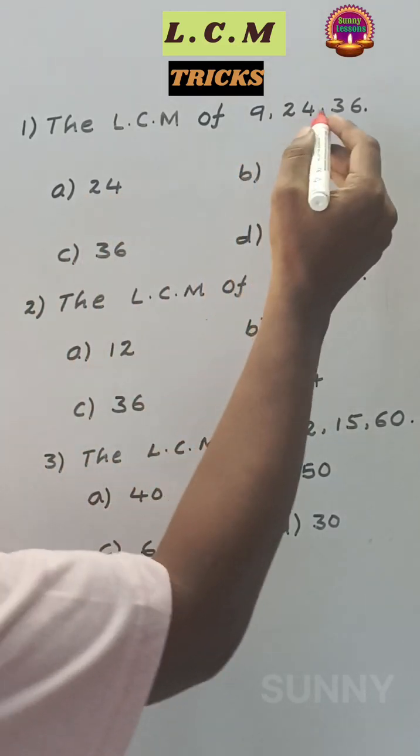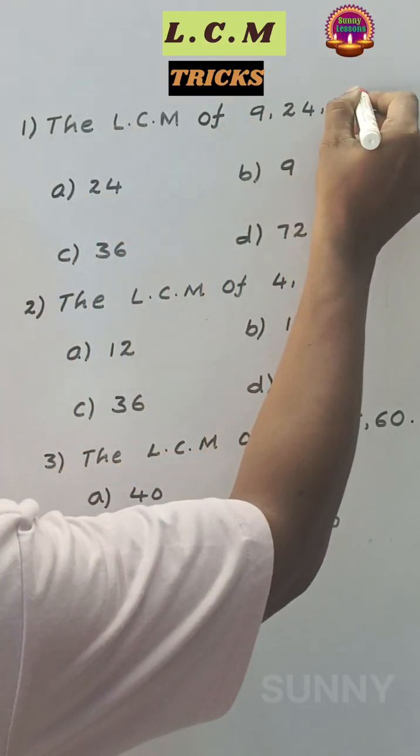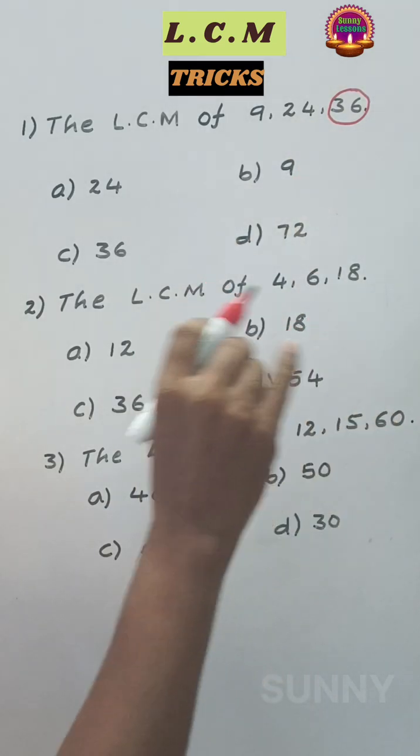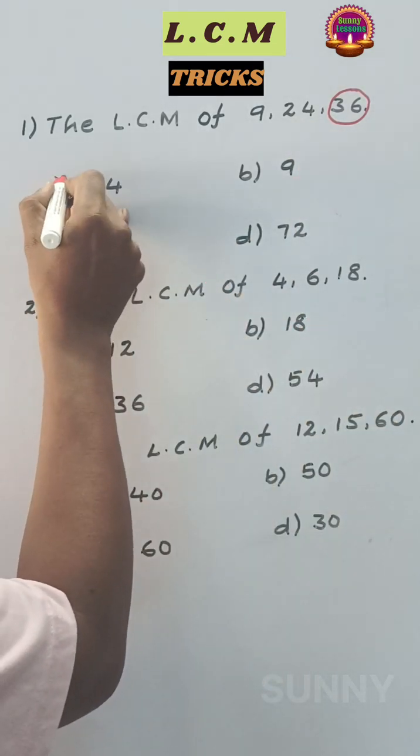The LCM of 9, 24, 36. Among these, 36 is greater, so the LCM is either 36 or multiples of 36. So 24 is not a multiple of 36.